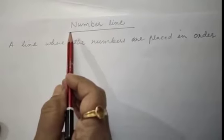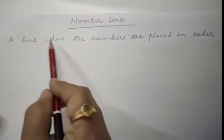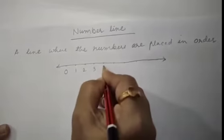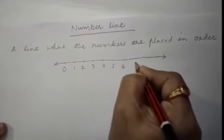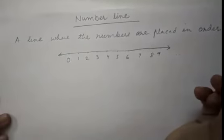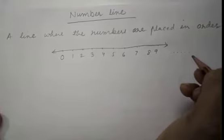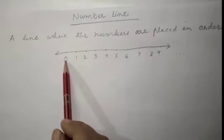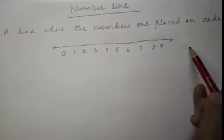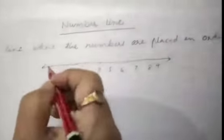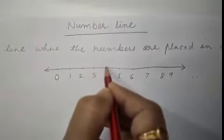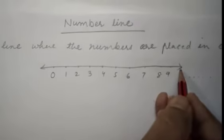Let us start the next topic, that is number line. A line where the numbers are placed in order. 1, 2, 3, 4, 5, 6, 7, 8, 9, then so on. 0, 1, 2, 3, 4, 5, 6, 7, 8, 9 and so on. We can write the numbers. So this is called as a number line where the numbers are placed in order.